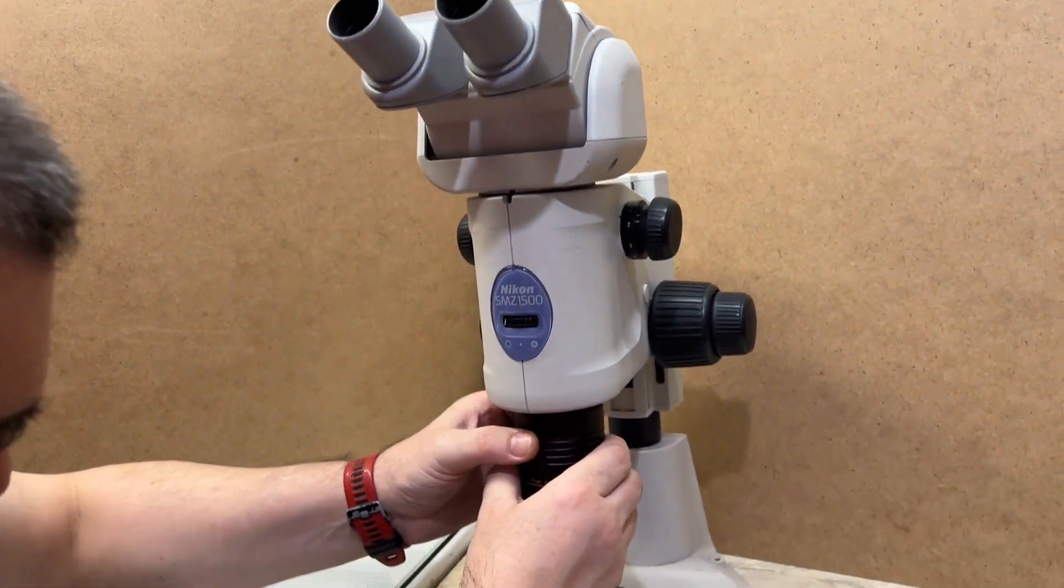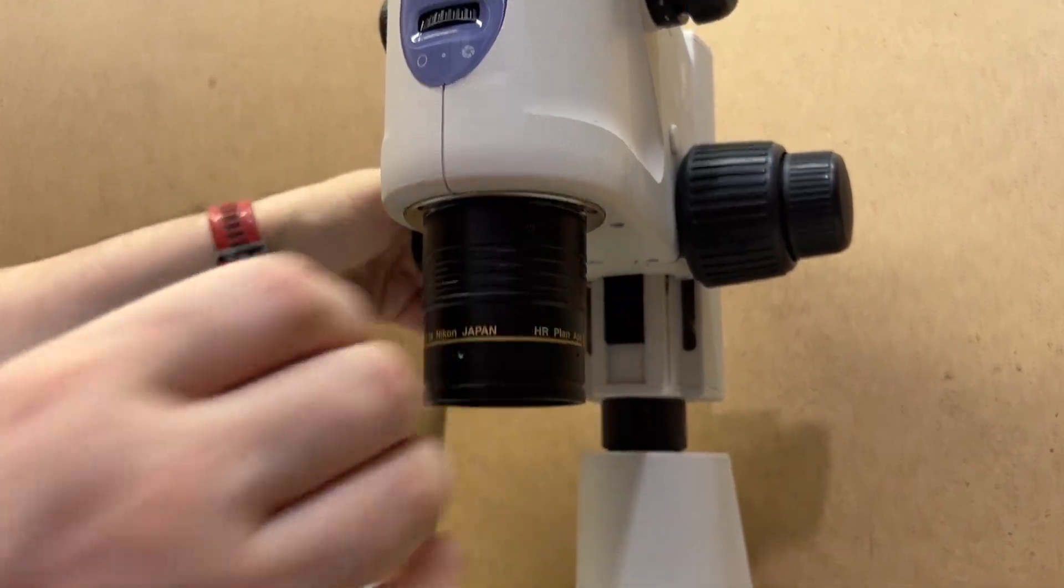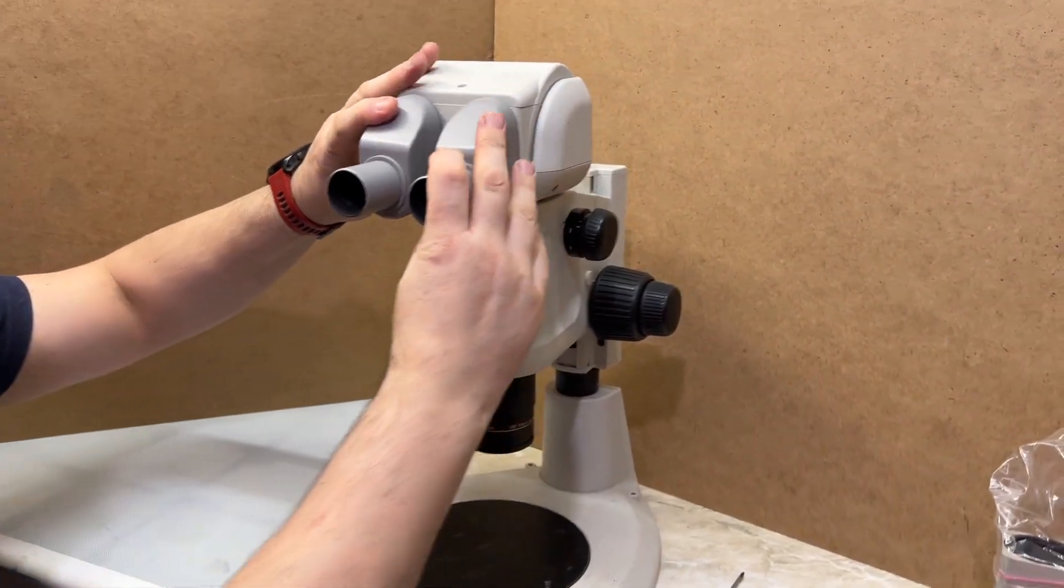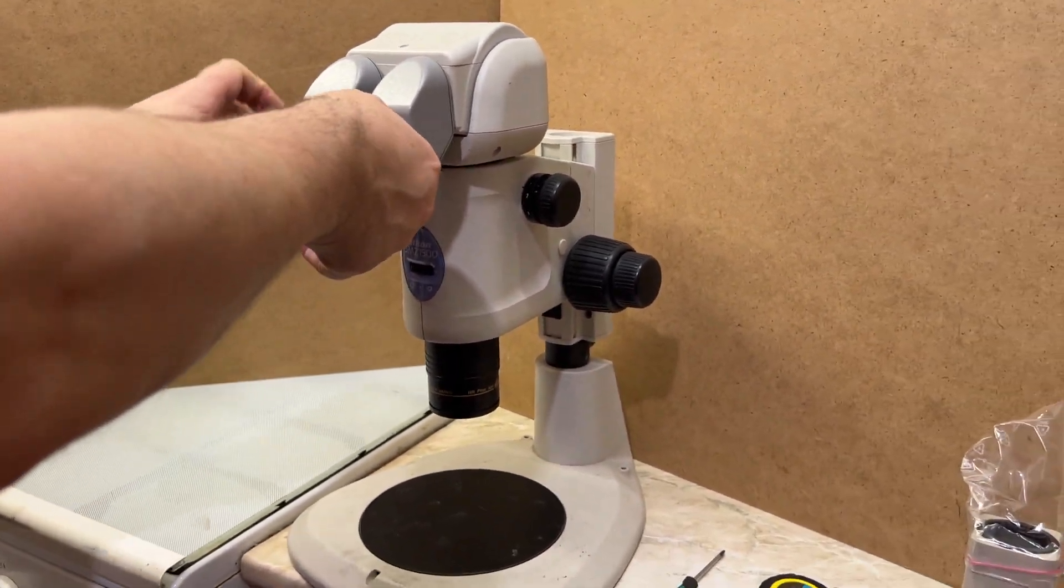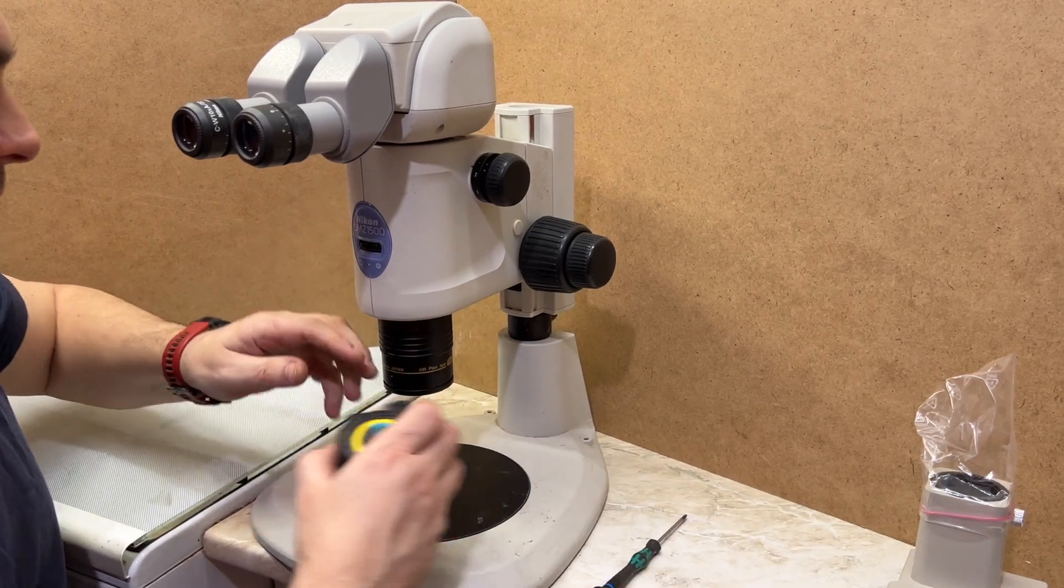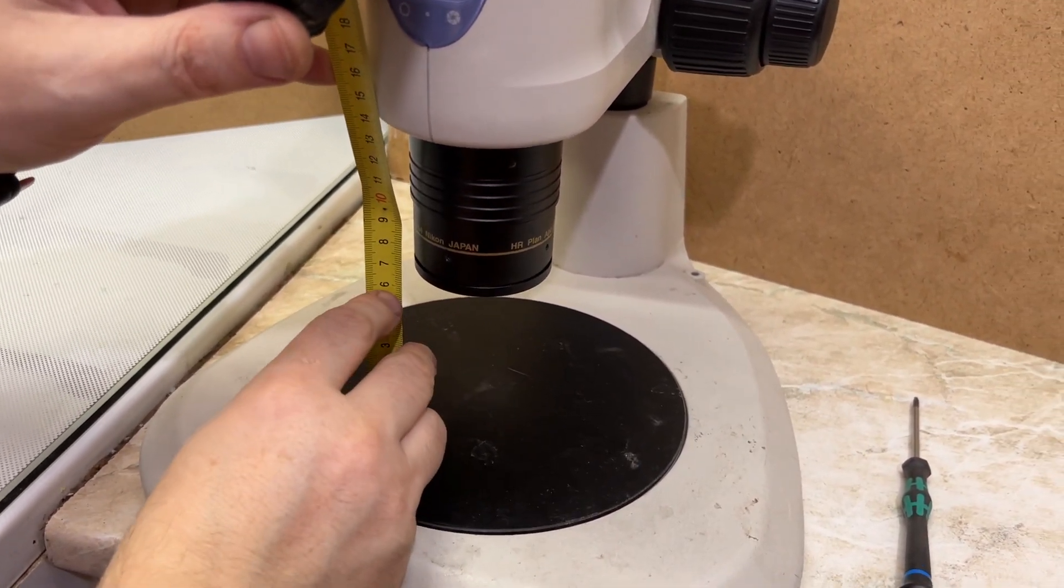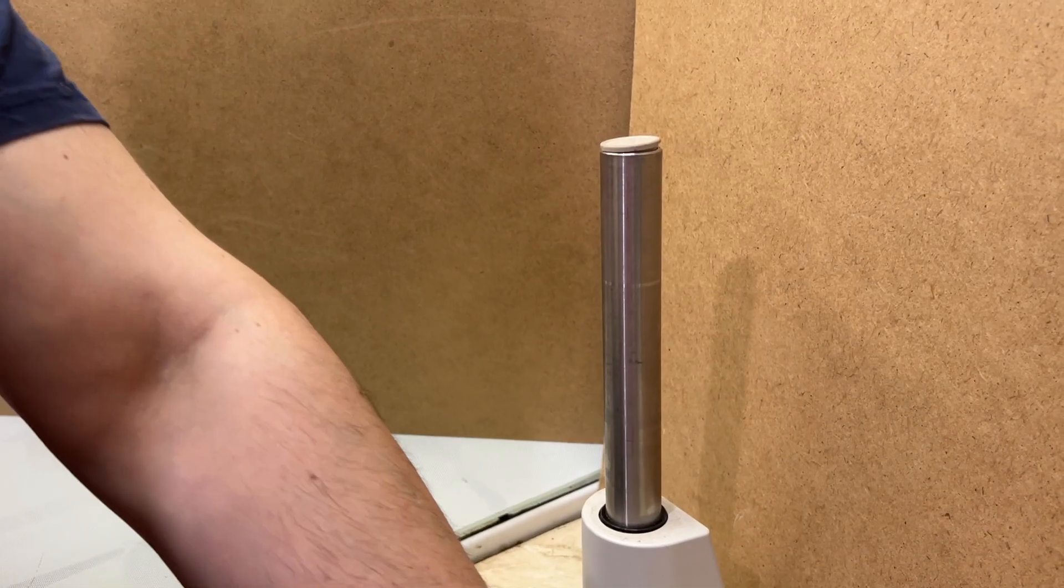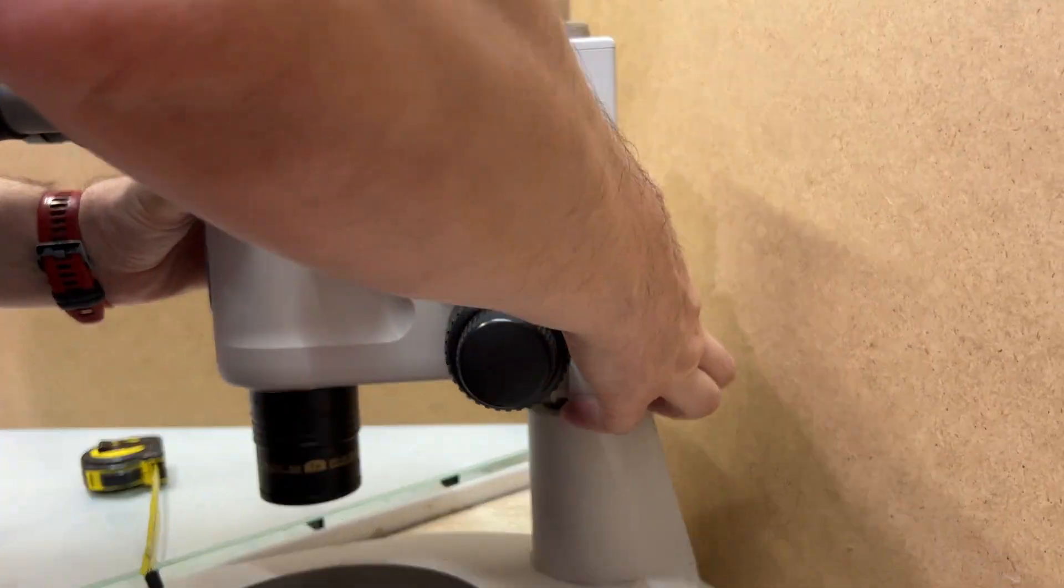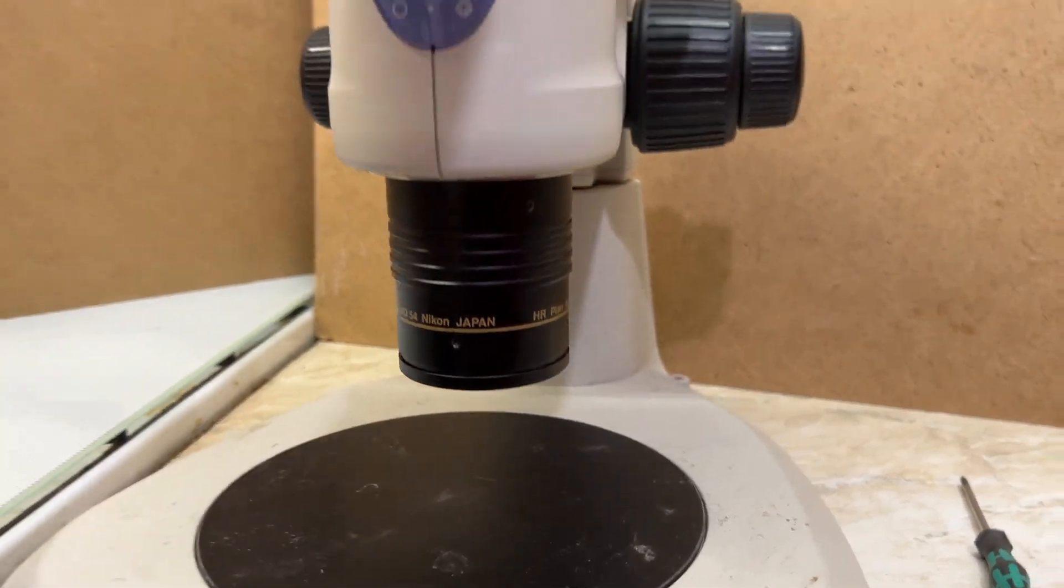After that we need to screw in our objective. It's a huge brick of metal. We can't reach it because we have this ring. We need to take it away, we don't need it in our case. Now we can easily reach our 54 millimeters working distance with this objective.